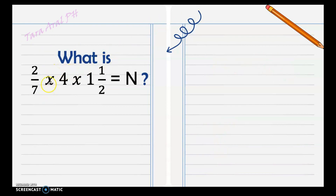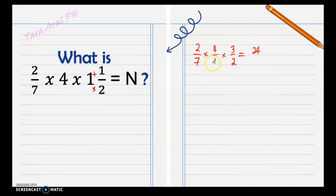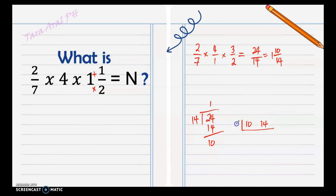Next, what is 2/7 times 4 times 1 and 1 half? 2/7 is already a proper fraction, so we copy that. For the whole number 4, we put 1 as the denominator. For 1 and 1 half, we change it to an improper fraction: that's 3 over 2. Now multiply: numerators — 2 times 4 times 3 is 24; denominators — 7 times 1 times 2 is 14. It's still an improper fraction, so we change it to a mixed number: 1 remainder 10, giving 1 and 10/14. Since 10 and 14 can be reduced — their common factor is 2 — we get 5 and 7. So the answer is 1 and 5/7.